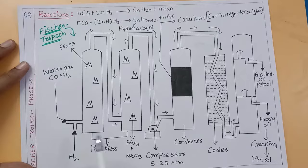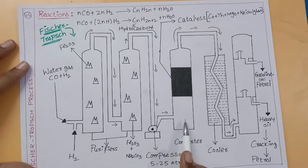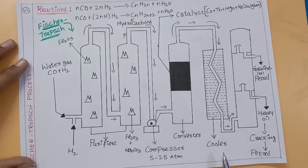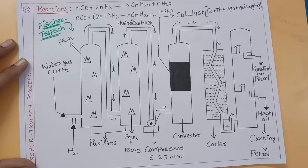There are about five columns or five towers in the Fischer-Tropsch process. Tower one, two, three, four, five. The first two towers are called purifiers. The third tower is called converter. The fourth tower is called cooler. The fifth tower is called fractionating column or fractionating tower.